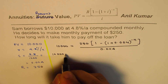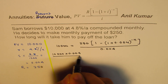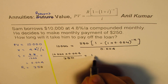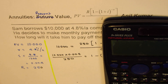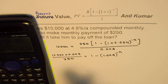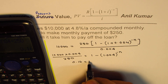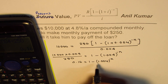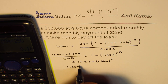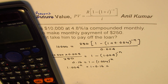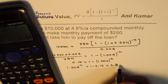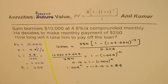Rearranging: ten thousand times 0.004 divided by 250 equals 1 minus (1.004) to the power of minus n. Calculating the left side gives us 0.16. So we have 0.16 equals 1 minus (1.004) to the power of minus n. Rearranging further: (1.004) to the power of minus n equals 1 minus 0.16, which equals 0.84.